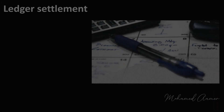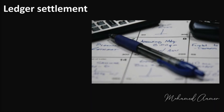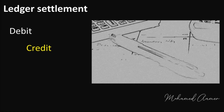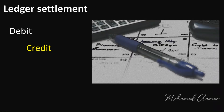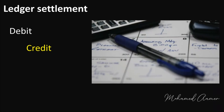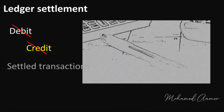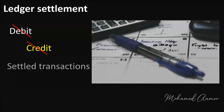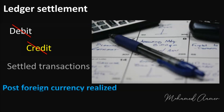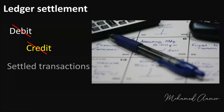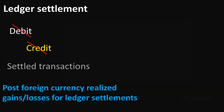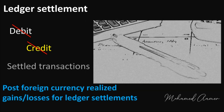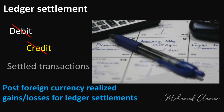By and large, settlement procedure entails the matching of debit and credit transactions within the general ledger. The ledger settlement closes debits with credits, indicating the completion and closure of the underlying business events associated with these transactions. In this video, we will explore the new feature of posting foreign currency realized gains or losses for ledger settlements.